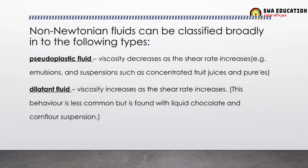Non-Newtonian fluids are classified into several types. The first is pseudoplastic, where viscosity decreases as shear rate increases. Examples include concentrated fruit juices and purees. The second is dilatant fluid, where viscosity increases as shear rate increases. This behavior is very less common in food processing but is found in liquid chocolate and cornflour suspension.